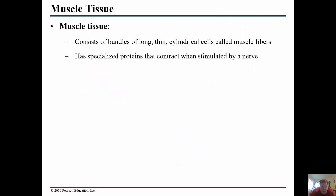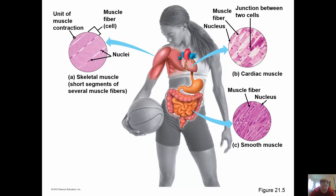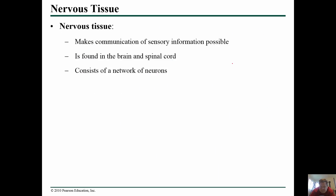Muscle tissue consists of bundles of long cylindrical cells called muscle fibers. It has special proteins that contract, and muscles are one of the two types of tissues that make us animals — they allow us to move. We have skeletal muscles for voluntary movement like running, smooth muscle for moving food through our intestinal system, and cardiac muscle which allows us to beat our hearts.